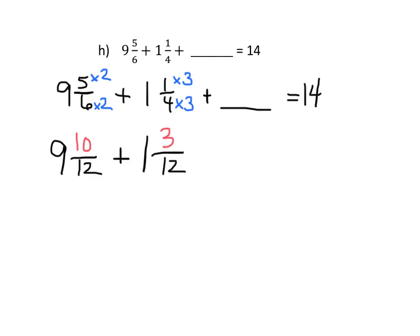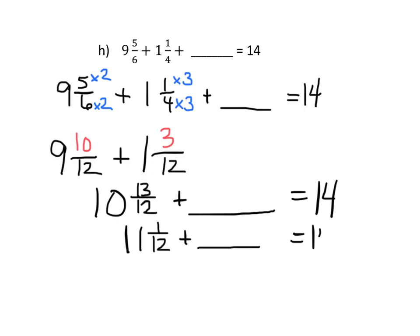So now, let's just add these together. 9 plus 1 is 10. That was this 9 plus this 1 is 10. And then 10 twelfths plus 3 twelfths gives us 13 twelfths plus a blank equals 14. And really, 10 and 13 twelfths, that equals 11 and 1 twelfth plus what equals 14.